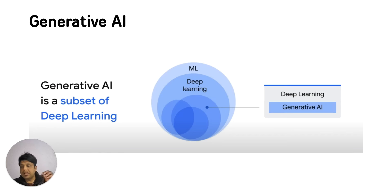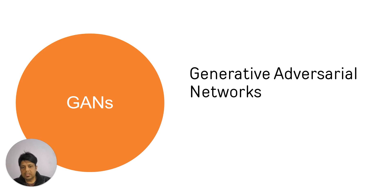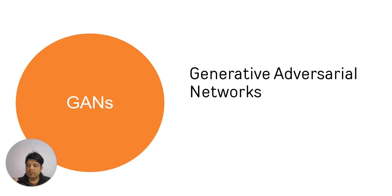ML is part of Artificial Intelligence, Deep Learning is part of Machine Learning, and Generative AI is part of Deep Learning. In Generative AI, two AI models work in tandem. In traditional AI, you have one AI model that does the task. But in Generative AI, there are two models. When we combine these two models, this is known as Generative Adversarial Networks.